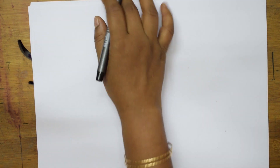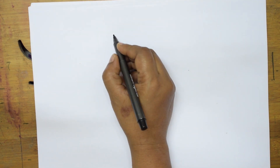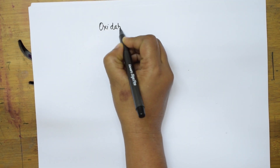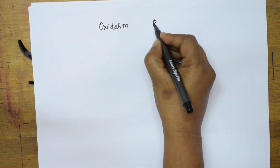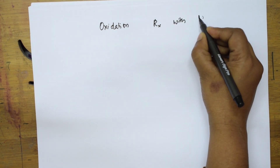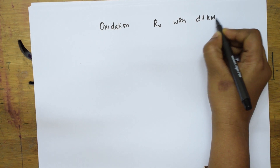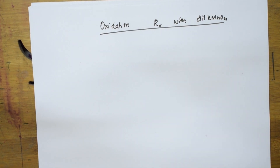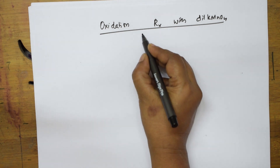The next important concept we will be learning is oxidation reactions with dilute KMnO4. KMnO4 is an oxidizing agent. It is going to release nascent oxygen, and that nascent oxygen will help in the oxidation process.